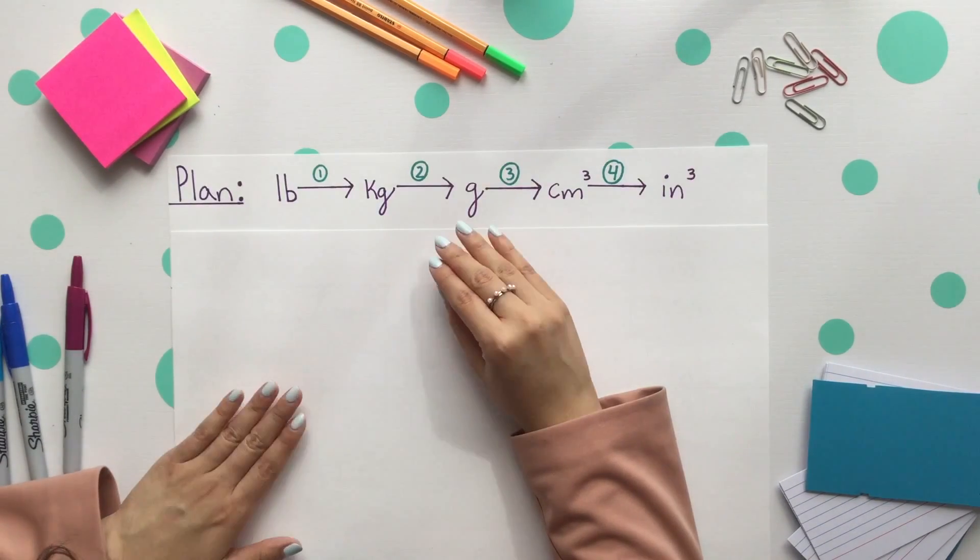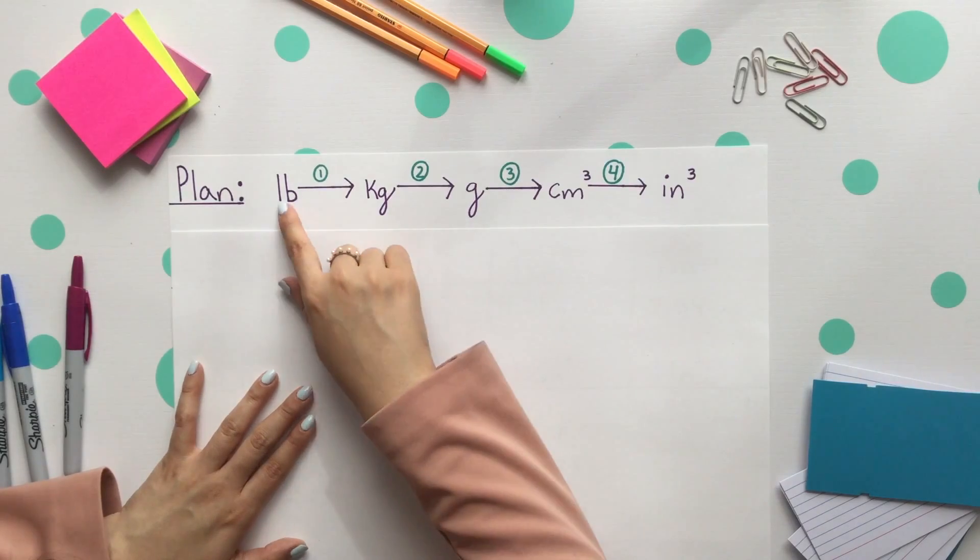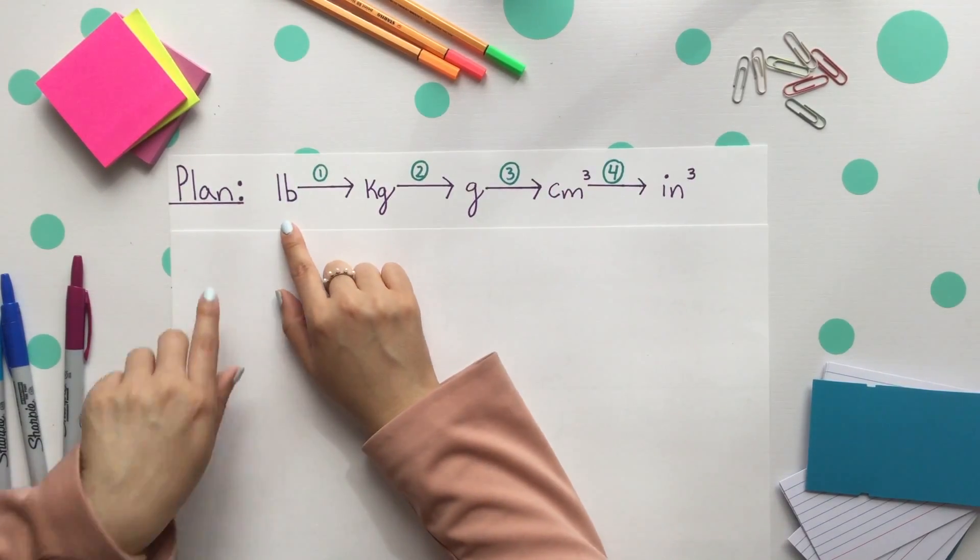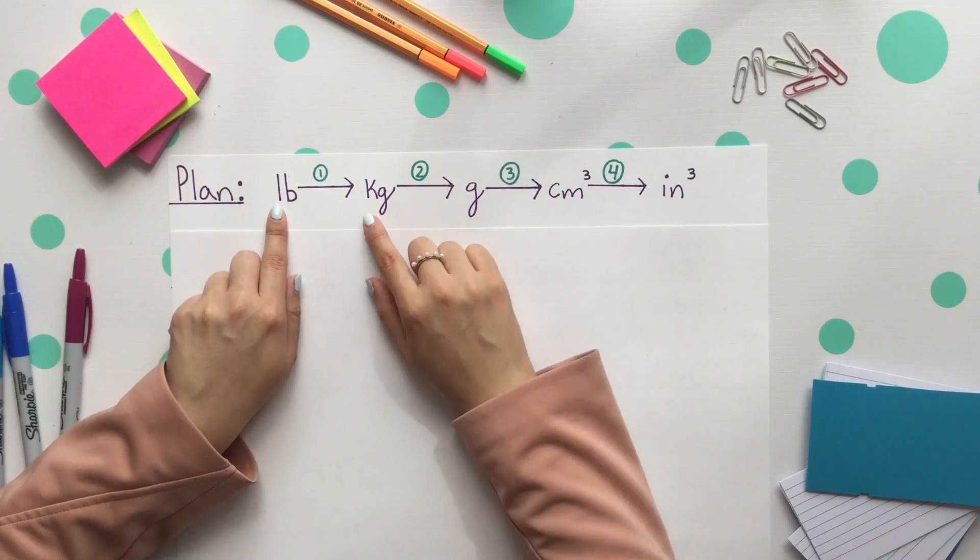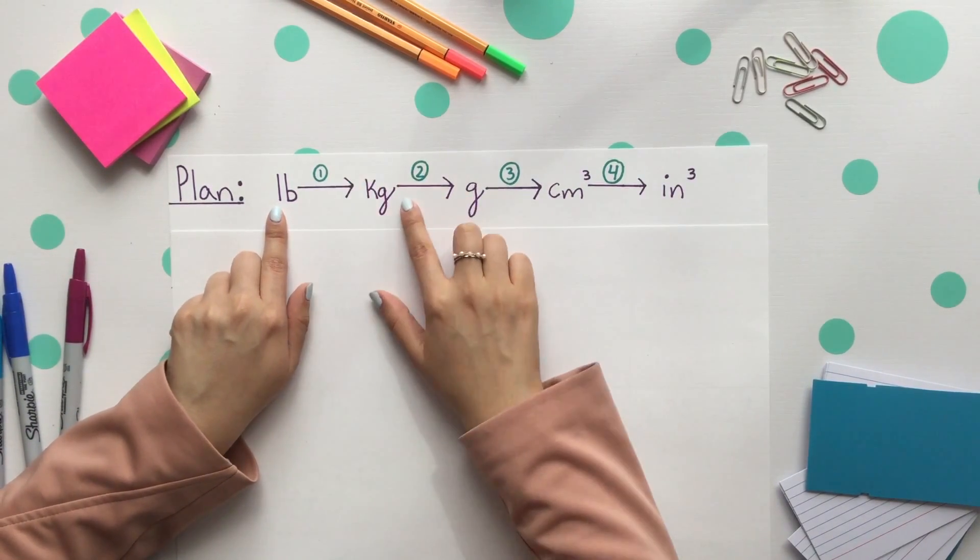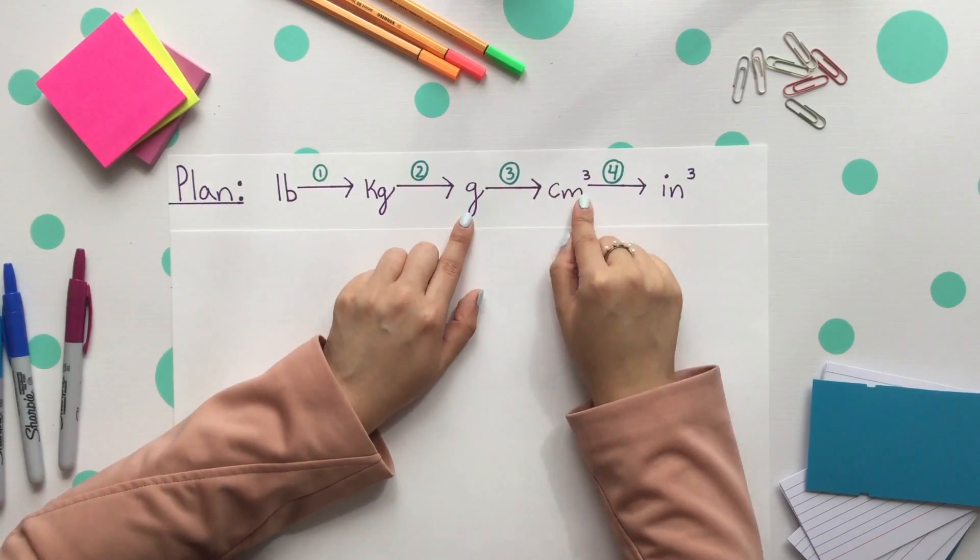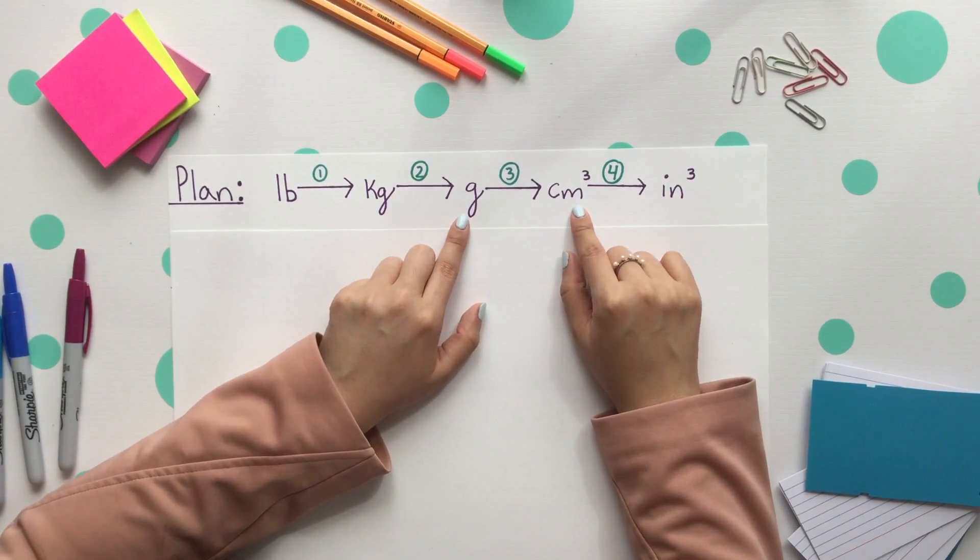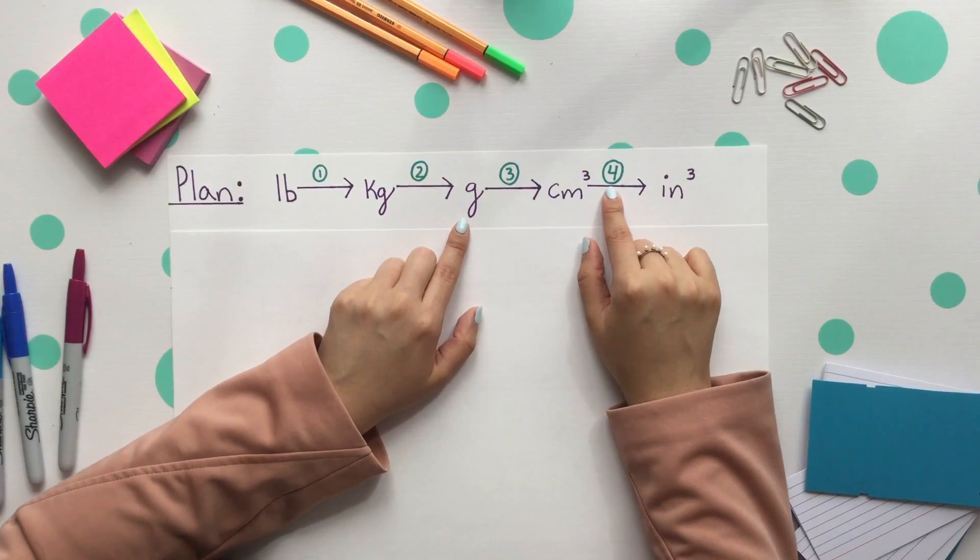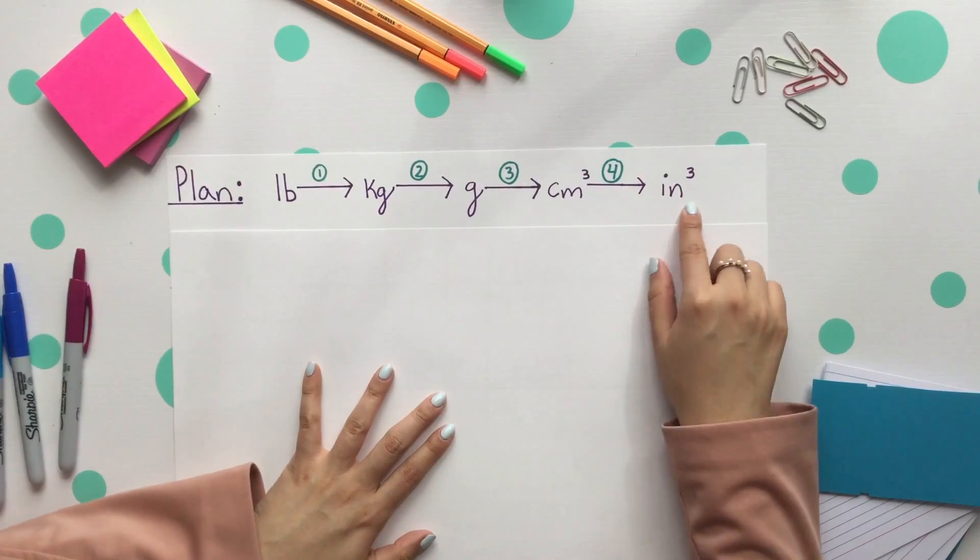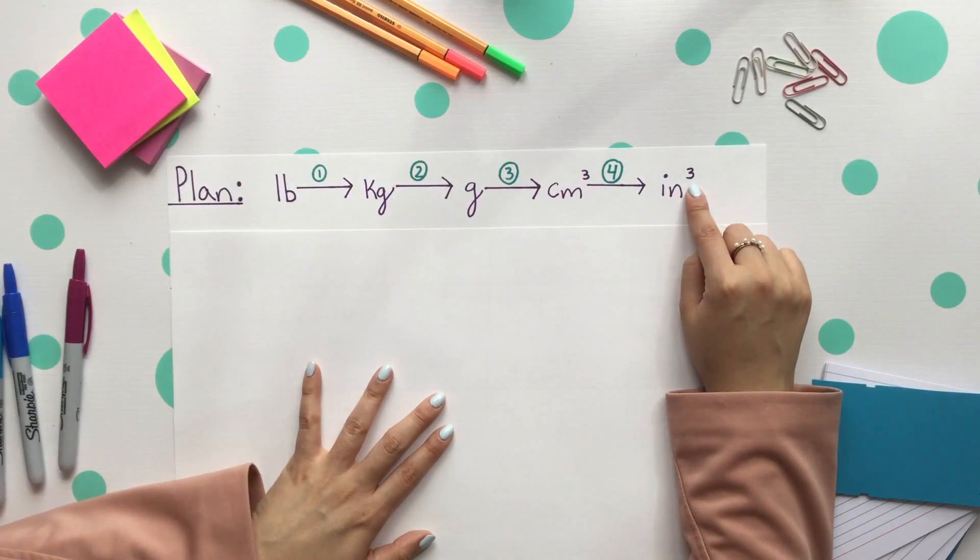As we saw before, we have four conversion factors. Our plan is starting with our given unit, which is in pounds, using our first conversion factor to get to kilograms. Then we'll use our second conversion factor to get to grams. Our third conversion factor, which was density, to get to cubic centimeters. And lastly, we'll use our fourth conversion factor to get to inches. And we'll see that we will have to cube at the very end.